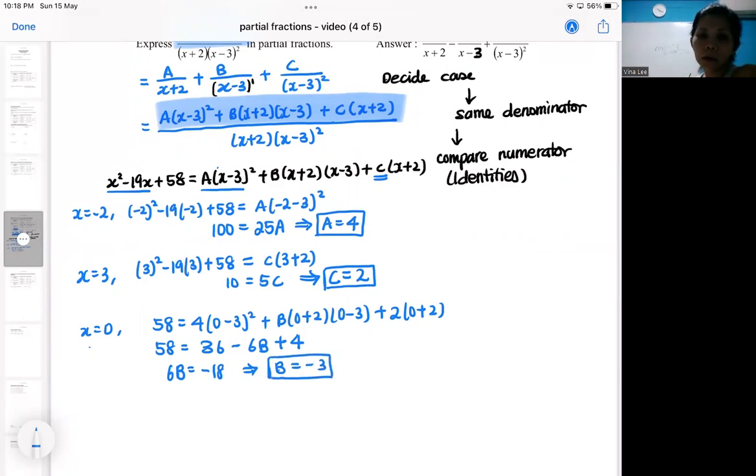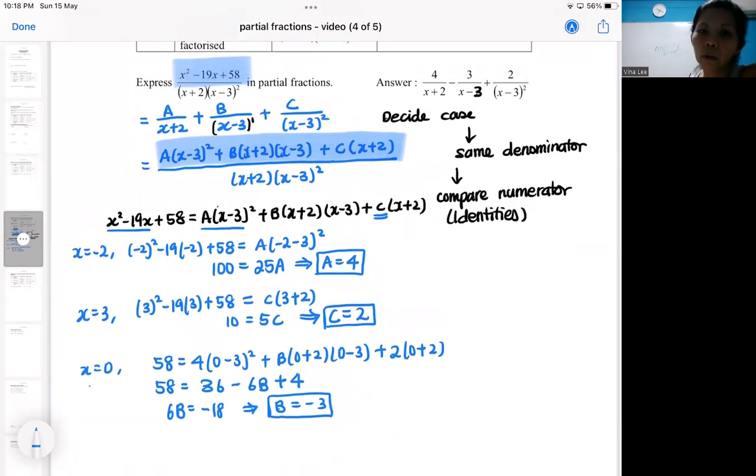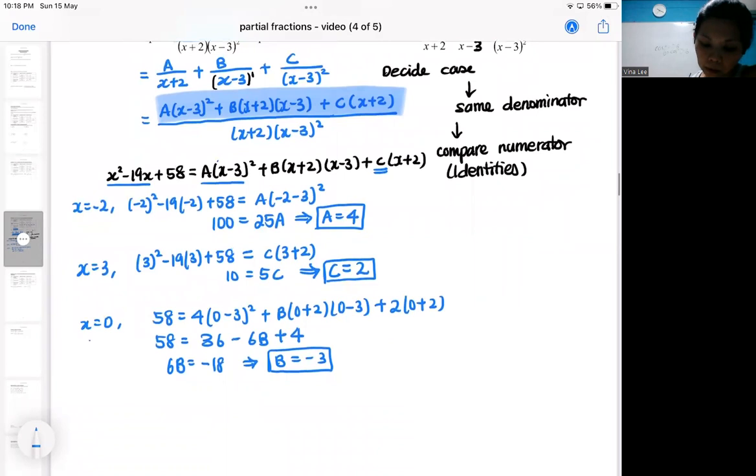So all these are the process of identities. So with whatever you have found, you return it. You return it, you will get your three nice fractions.